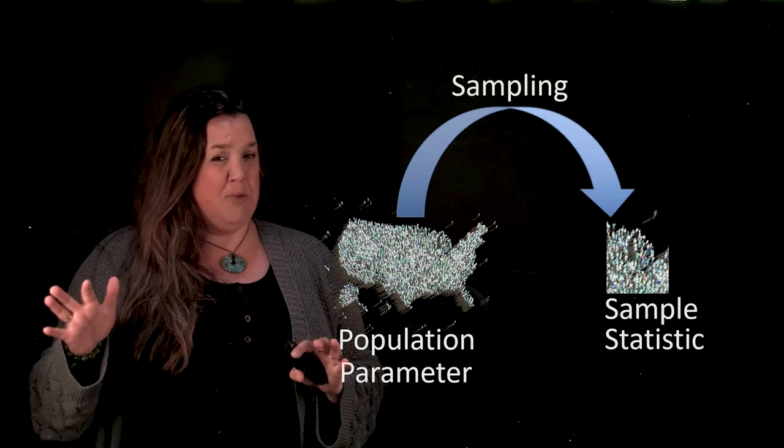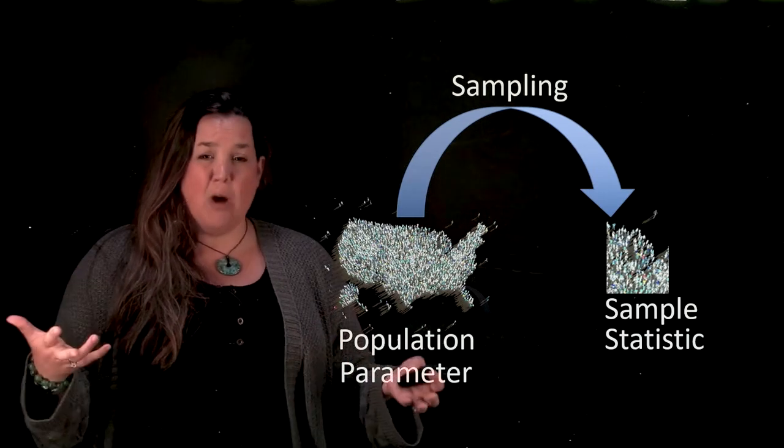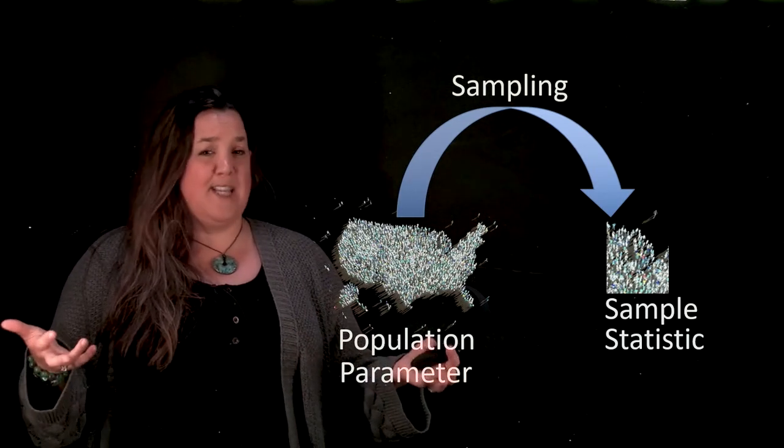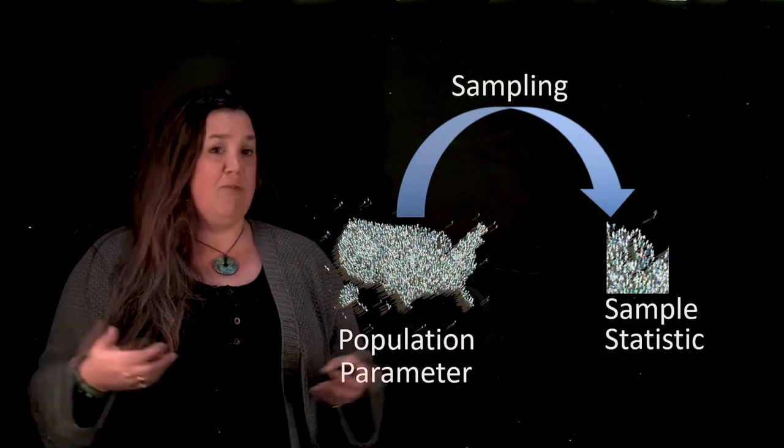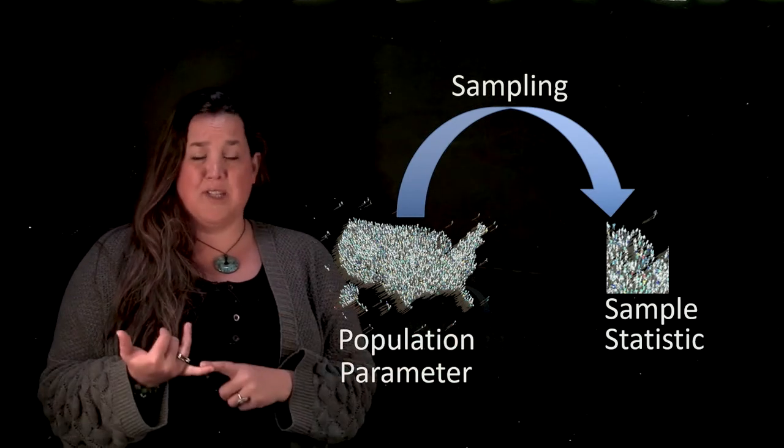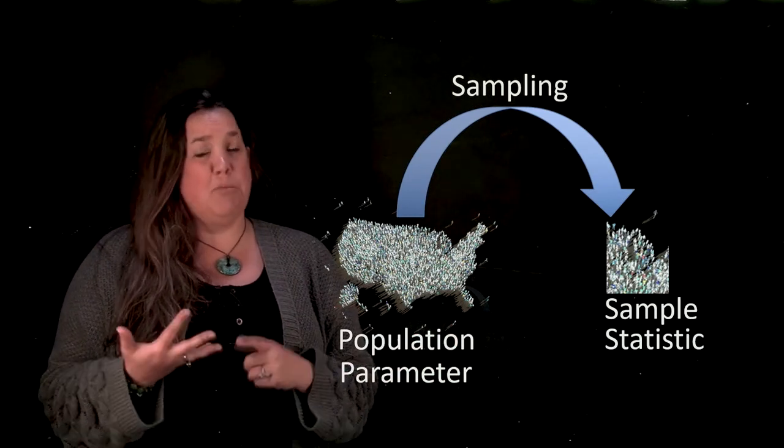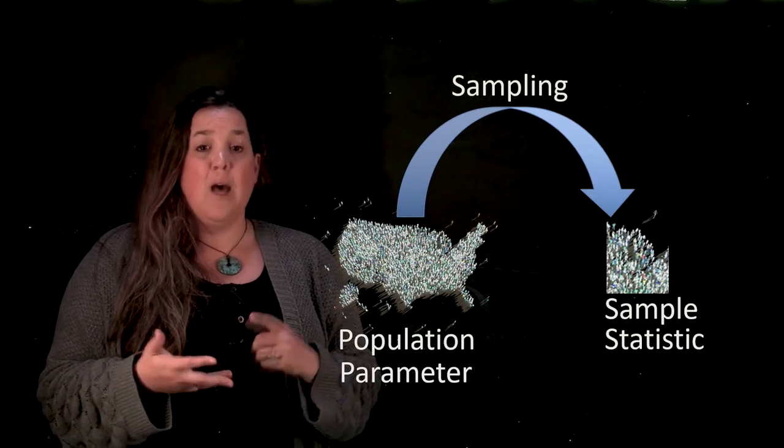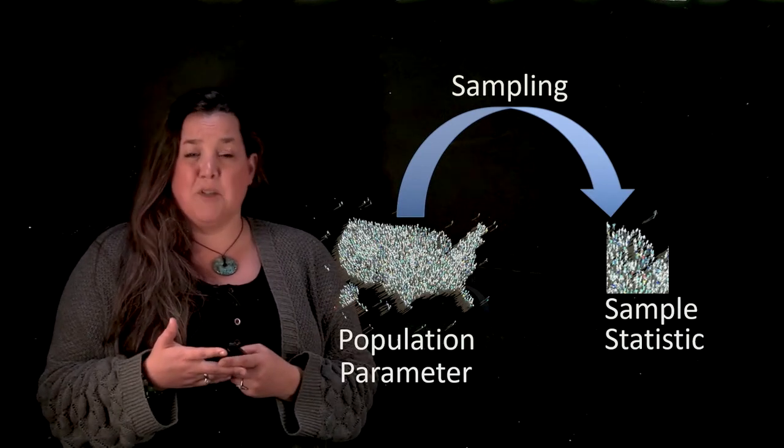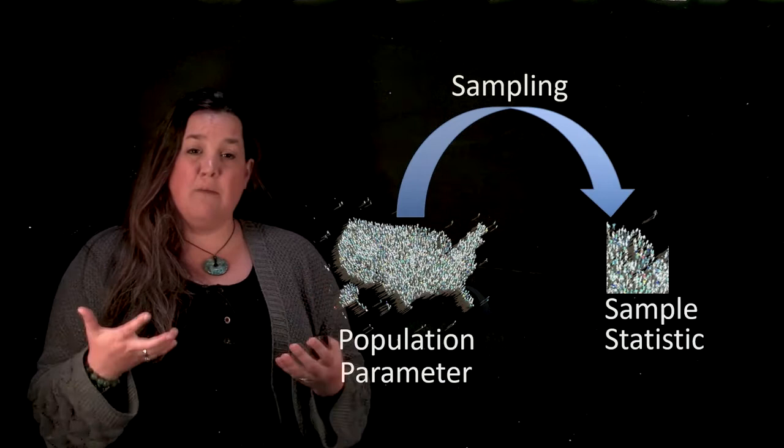Now, most of the time, we're not able to do that, right? Because if you talk about even the U.S. census, they don't always get all of the people for various reasons. It's really expensive. It's nearly impossible. People are born and they die. You have some people who are experiencing homelessness and you can't get information from them.